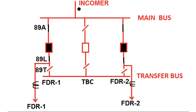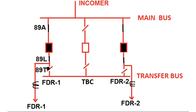This is the incomer circuit — it may be a transformer side, that is the LV side of any transformer, or it may be any feeder circuit. Through this incomer, the main bus is taking power. 89A is the bus side isolator, 89L is the line side isolator, and 89T is the transfer bus side isolator since it is connected towards the transfer bus.